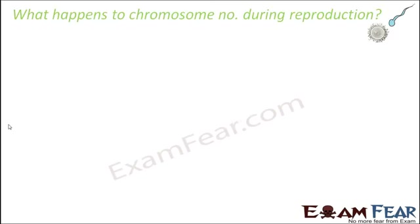Let us see what happens to the chromosome number during reproduction, because chromosomes are going to play the main role in the story of genetics. Chromosomes play the leading role — like the lead actor in a movie. We already have discussed the process of sexual reproduction in human beings, so we have a basic idea about what a chromosome is and how many chromosomes exist in a human body.